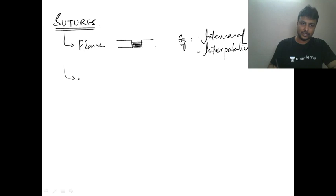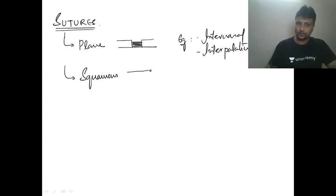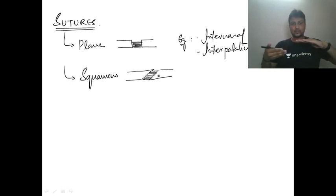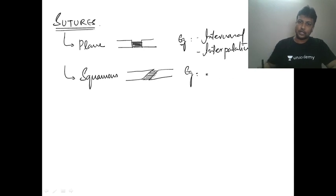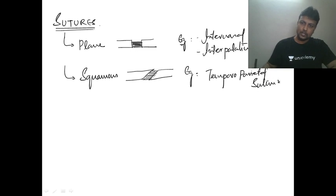The second category is the squamous suture. In a squamous suture, the ends of two bones overlap each other and are connected by fibrous tissue. The example of the squamous suture is the temporoparietal suture — between the temporal bone and the parietal bone.